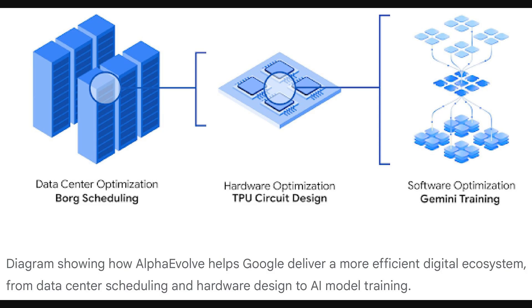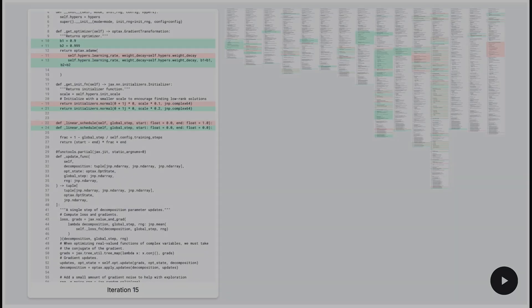Second, we see hardware optimization, focusing on tensor processing unit circuit design. And third, software optimization, exemplified by improving Gemini training. The overall picture here is how AlphaEvolve contributes to a more efficient digital ecosystem across Google's infrastructure.